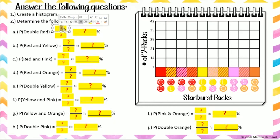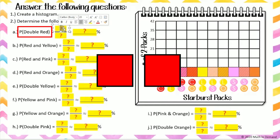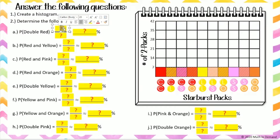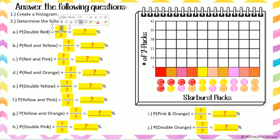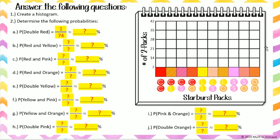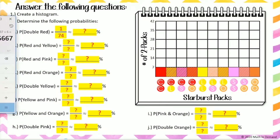Problem number 2a asks for the probability of opening up a Starburst pack and getting two red Starburst. I can determine the probability by taking the number of packs that had two reds and dividing this number by the total number of packs. I only had one pack that included two reds, which means I have a one out of 74 chance of obtaining a pack that has two red Starbursts.